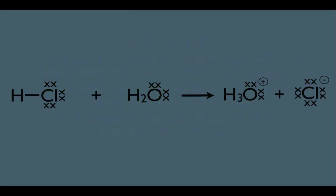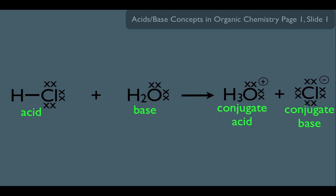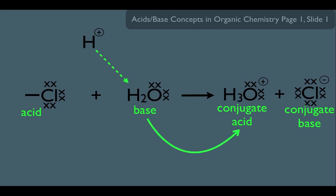Let's make sure we understand these key points. What you see in front of you is an acid-base reaction. This species is acting like the acid, which means it turns into what's called a conjugate base. This species here is acting as the base, which is going to turn into its conjugate acid. Now, how does that happen? Look at the acid — we take its hydrogen, which becomes an H-plus, and simply give it to H2O, the base. Giving it a hydrogen turns the base into a conjugate acid.